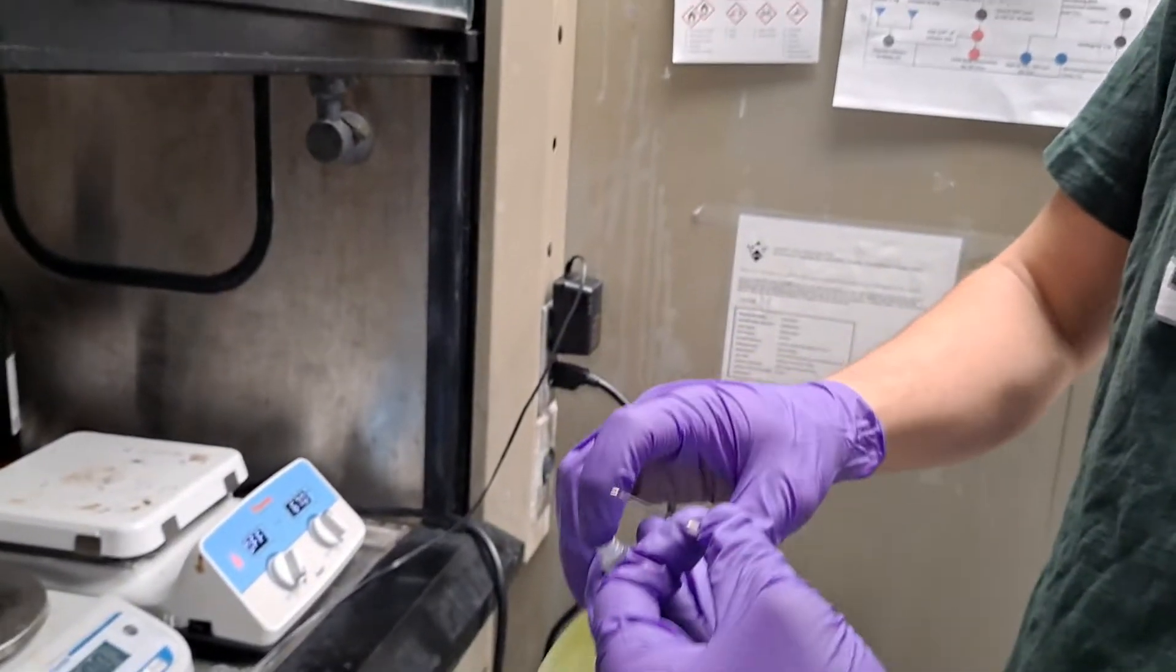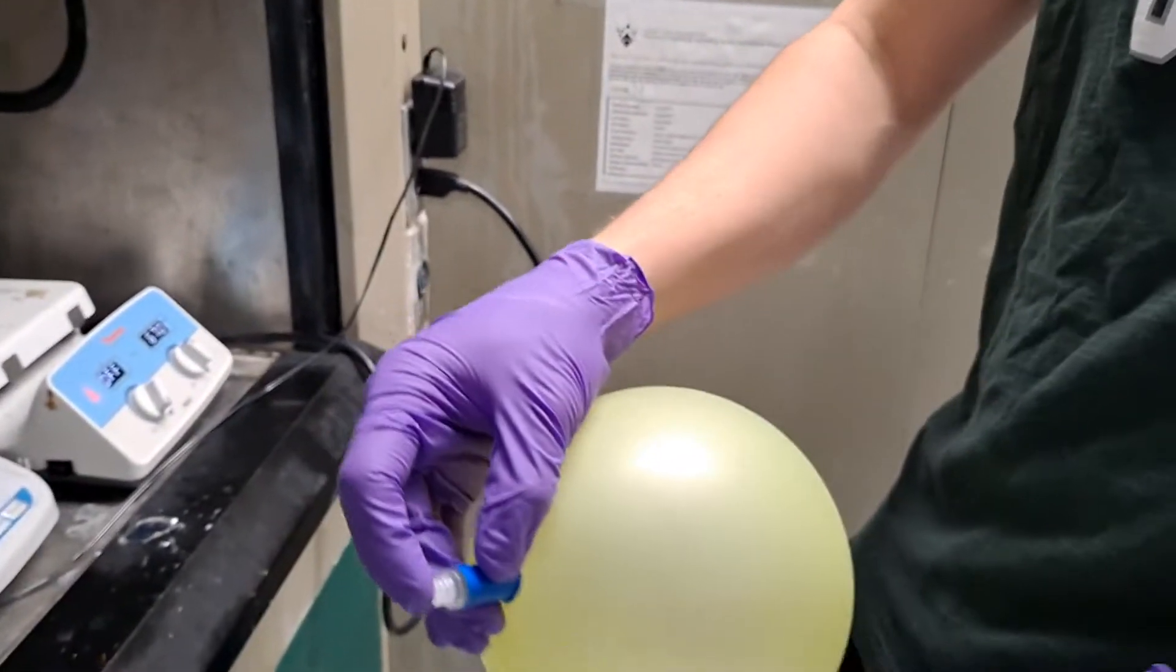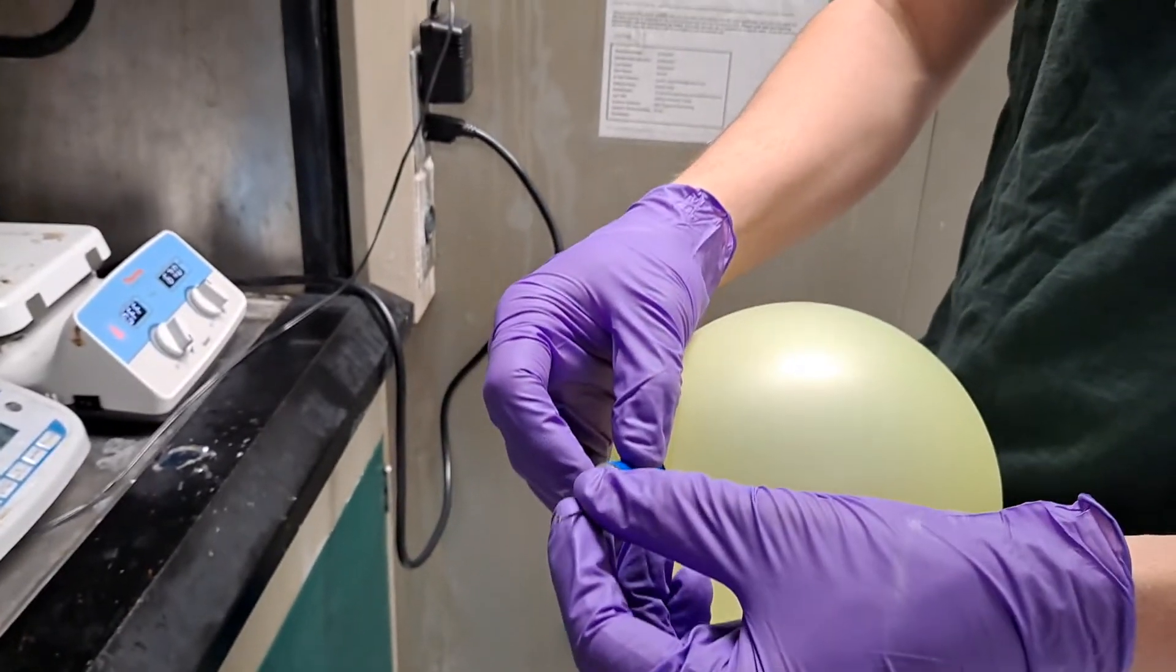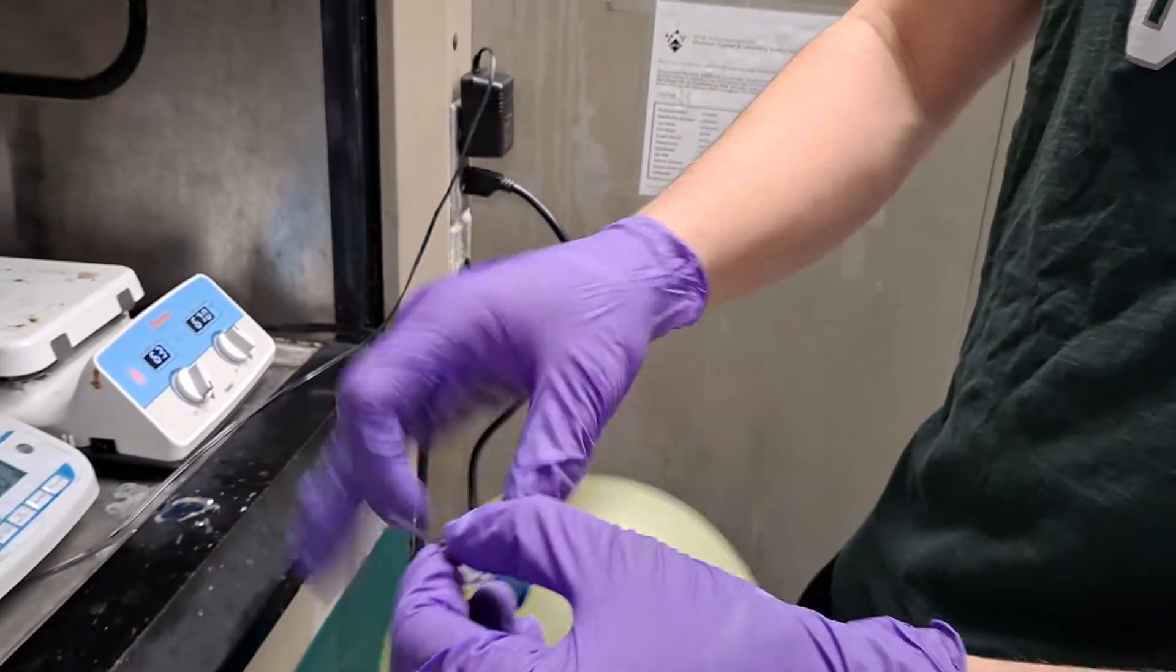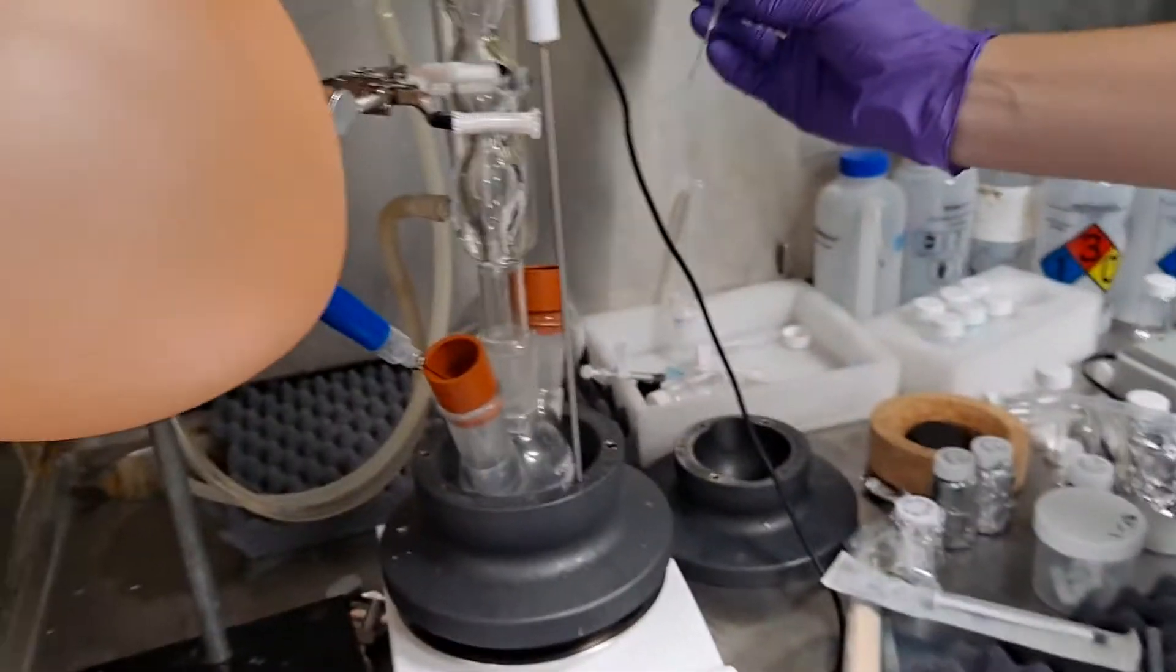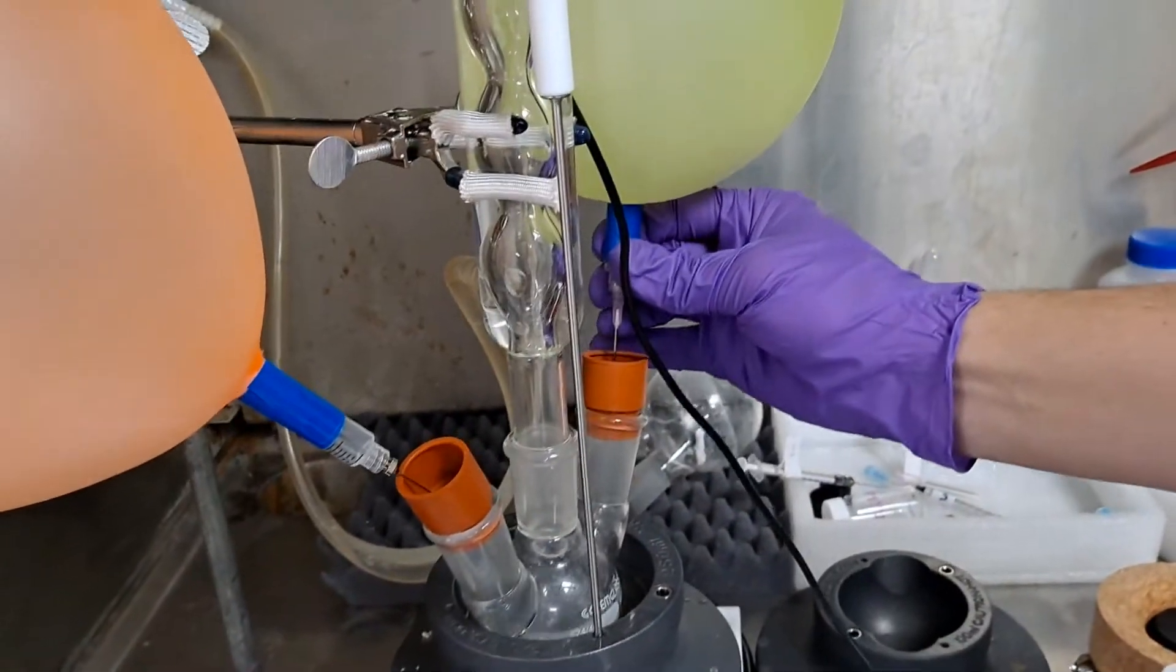All right, so next is where we put the balloon inside the reactor. Your finger is over this to make sure the gas doesn't come out, and you'll quickly remove your finger and put on the needle. Then come over to the chamber and just poke it in.